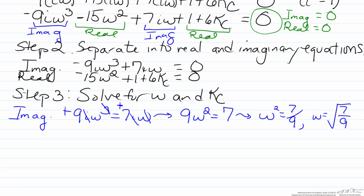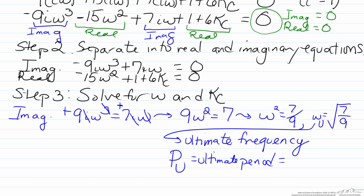So this final frequency here of square root of seven-ninths is often referred to as omega sub u, which is known as the ultimate frequency. So it corresponds to the frequency at which the process will oscillate at the borderline between stability and instability. Related to the ultimate frequency is p sub u, or the ultimate period, and recall that period and frequency are easily related to one another via 2pi over omega. So the ultimate period here is 7.12.